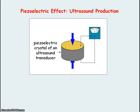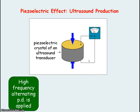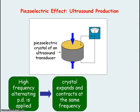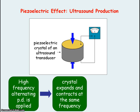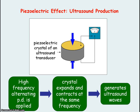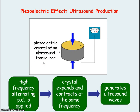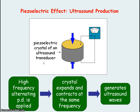Ultrasound is produced by the piezoelectric effect. This is when a high frequency alternating potential difference is applied across the crystal of an ultrasound transducer, the crystal expands and contracts — that is, it oscillates at the same frequency as the alternating potential difference. The expansion and contraction of the crystal results in the production of ultrasound waves. A transducer converts a signal from one form into another, so this ultrasound transducer converts the high frequency electrical signal into a high frequency sound wave, that is ultrasound.